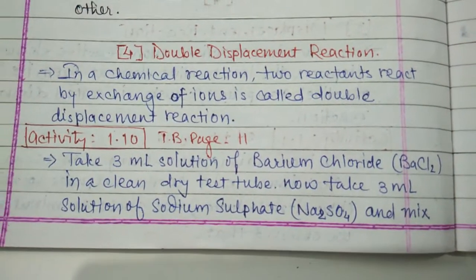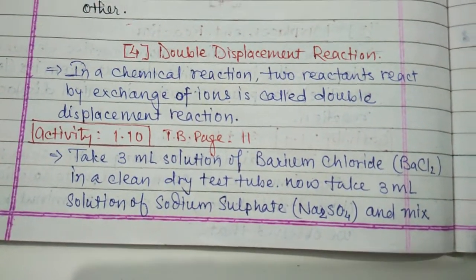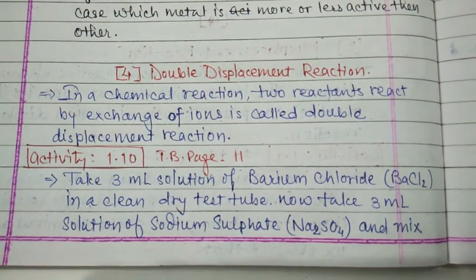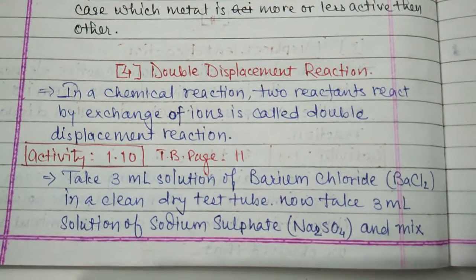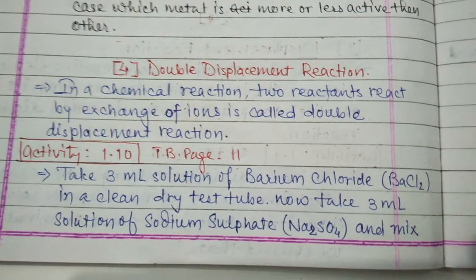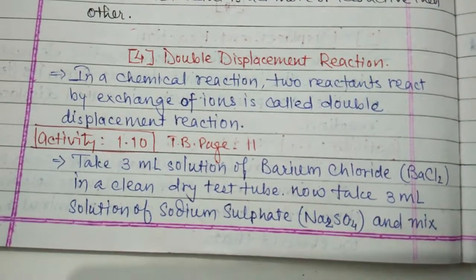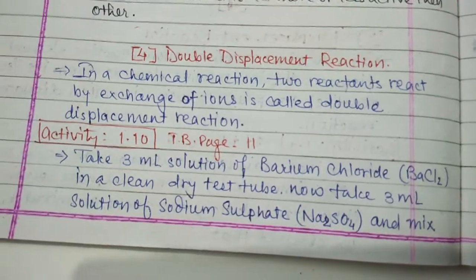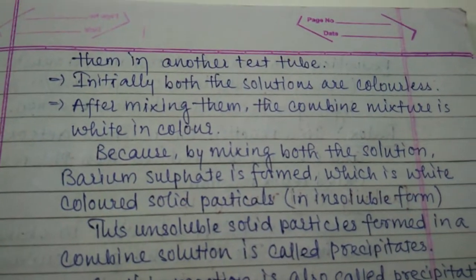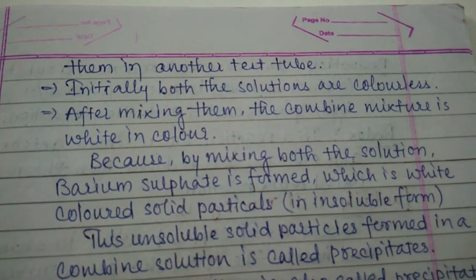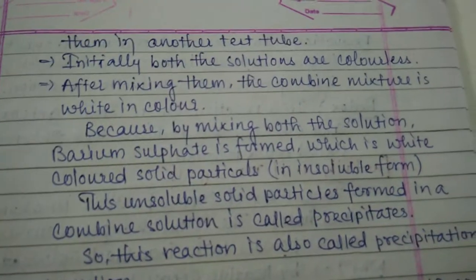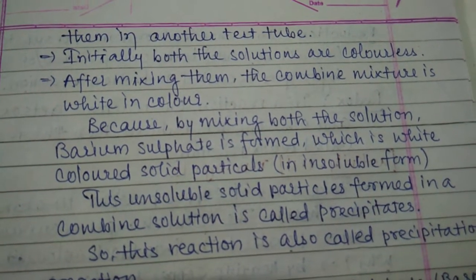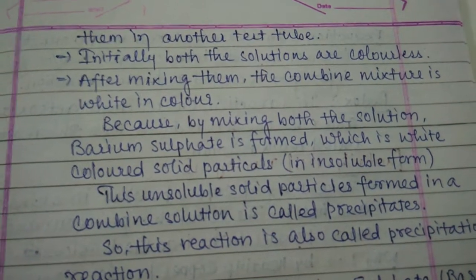As per Activity 1.10 from page number 11 of the textbook, two solutions are used — barium chloride (BaCl2) and sodium sulfate (Na2SO4). Both solutions are colorless. They are mixed with each other in a dry test tube. Initially both solutions are colorless, but after mixing, the combined mixture becomes white in color.